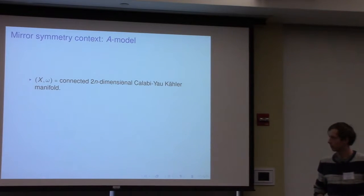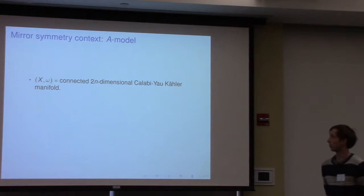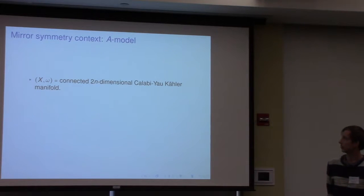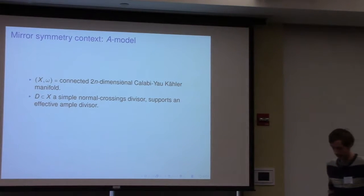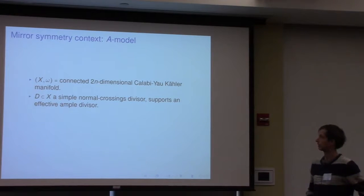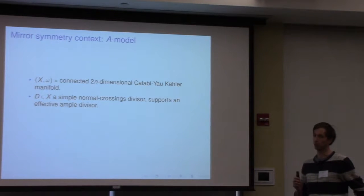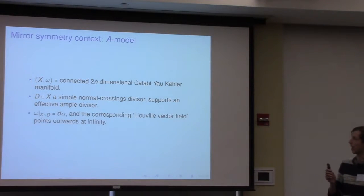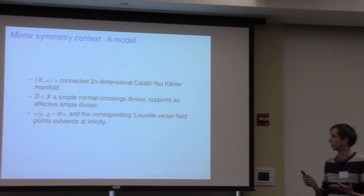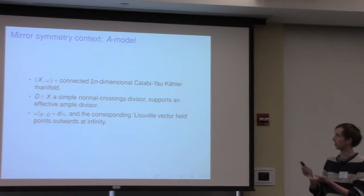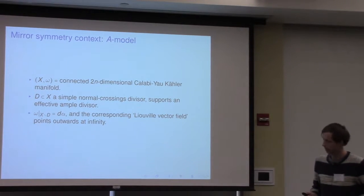Let me start by giving you the context in which we're going to study mirror symmetry. On the symplectic side, the A-model, we're going to let X be a connected, 2n-dimensional, Calabi-Yau manifold. The Kähler form is omega. An important part of our construction is going to be the choice of a simple normal crossings divisor D in X, which we're going to assume supports an effective ample divisor.